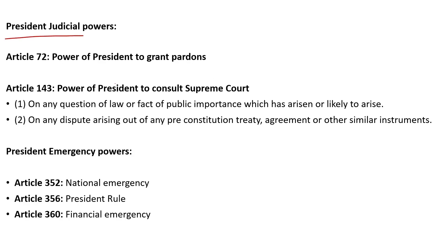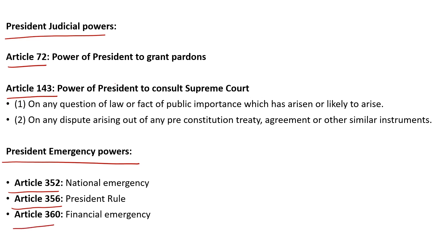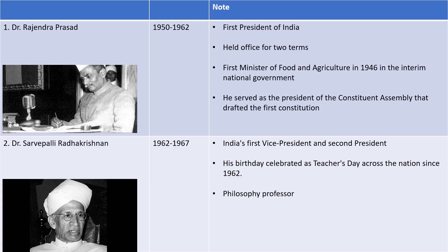Article 72 covers the president's judicial power — if a court gives a death sentence, the president may grant pardon, reprieve, or commutation. Article 143 covers the president's power to consult the Supreme Court. Article 352 covers the National Emergency. Article 356 covers President's Rule imposed in states. Article 360 covers the Financial Emergency — no Financial Emergency has ever been imposed in India.